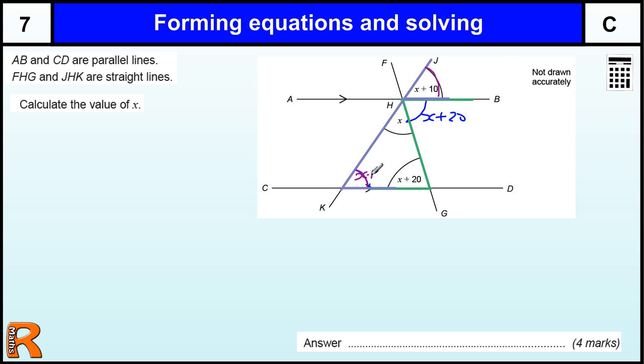So we have x plus 10 in here. Now to form our equation, we just need to take one of those rules of a straight line or the triangle to get our equation. So we have x plus x plus 20 plus x plus 10 equals 180. That gets you one mark straight off.